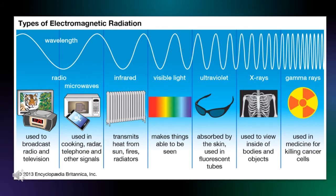The human eye is able to see red, orange, yellow, green, blue, indigo, and violet. Each of the colors of the electromagnetic radiation has a specific frequency which is measured in cycles per second or hertz.